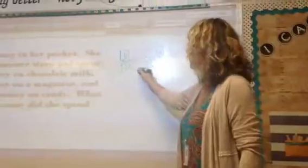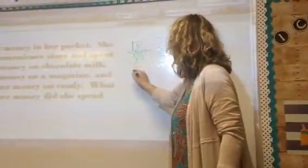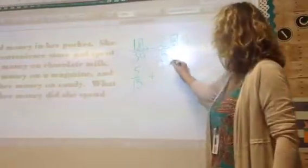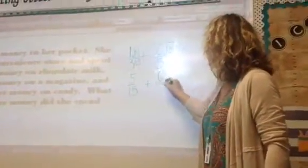Okay. We're rewriting one-third as five-fifteenths. We are rewriting two-fifths as six-fifteenths.